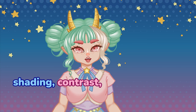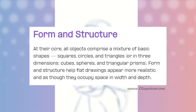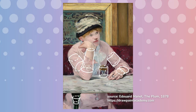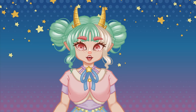And from CG Spectrum, they say at their core, all objects comprise a mixture of basic shapes — squares, circles, and triangles — or in three dimensions, cubes, spheres, and triangular prisms. Form and structure help flat drawings appear more realistic, and as though they occupy a space in width and depth. Pretty good definitions, right?